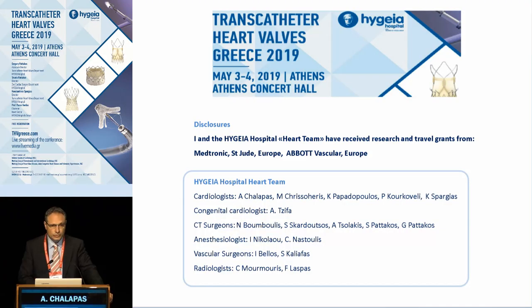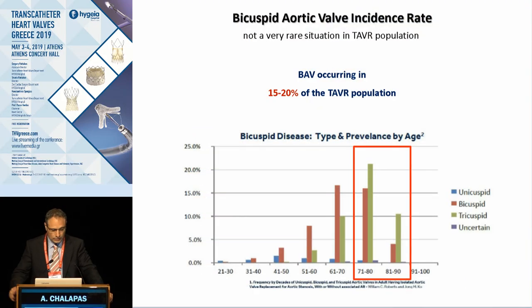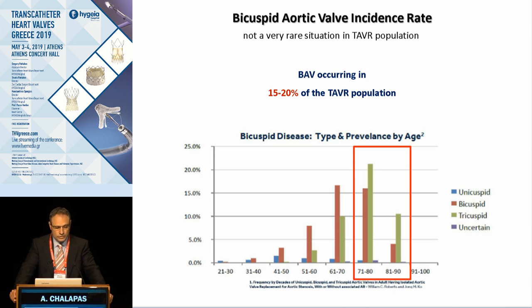And why is that? Because the bicuspid valve is characterized by anatomical and morphological heterogeneity, and at the same time, there are several issues. What we know is that the bicuspid valve is not a rare situation in the TAVR population — it occurs in up to 20% of cases.